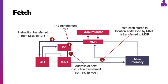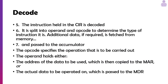As you can see in this diagram: step one, the address of the next instruction is transferred from the program counter to the MAR. We then find the location specified by the MAR and transfer that into the MDR. We then increment the program counter by one, and the MDR gets copied into the CIR, the current instruction register.